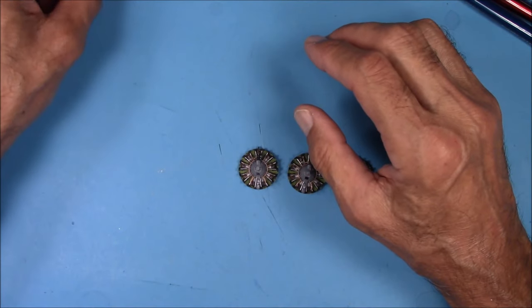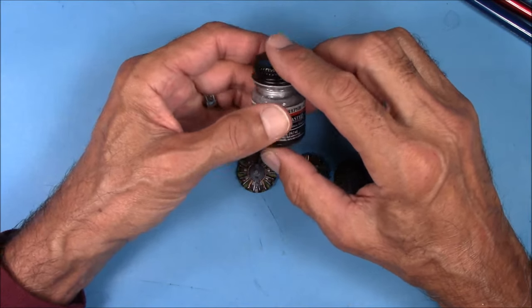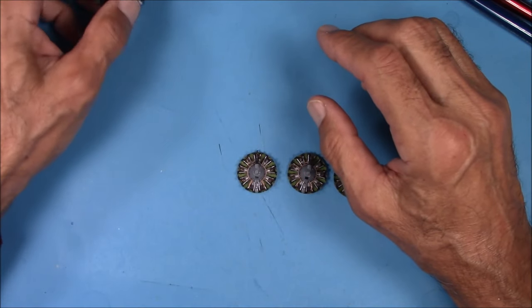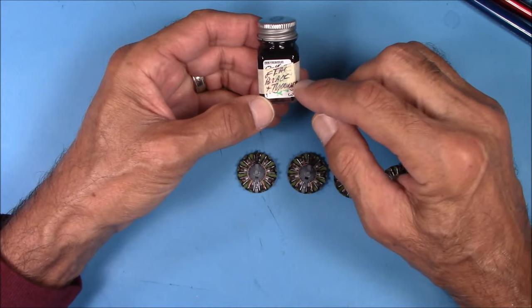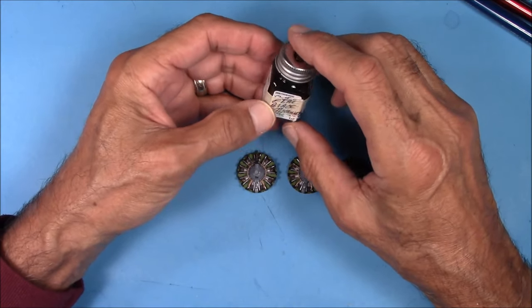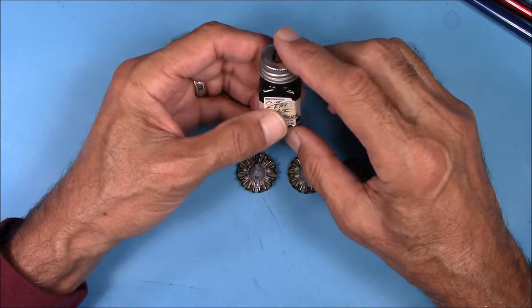And then the push rods, chrome silver. The tops of the push rods, the rocker arms, got a flat black, and I always put a few drops of thinner in these quarter bottles of tester paint. It makes the paint flow a lot easier.